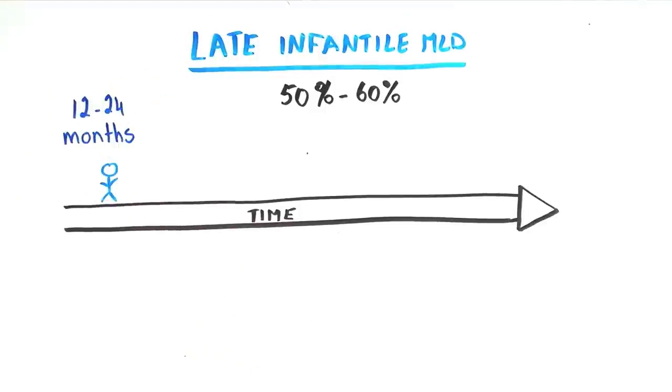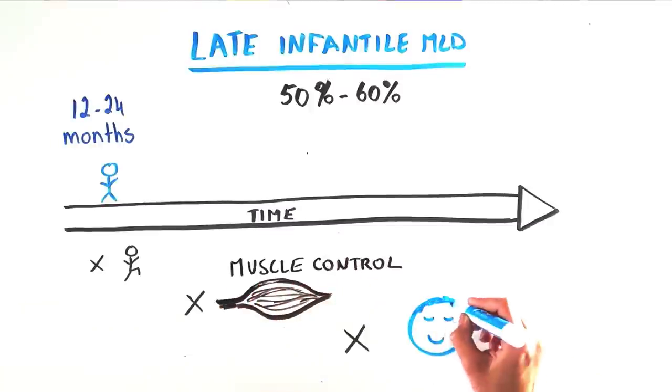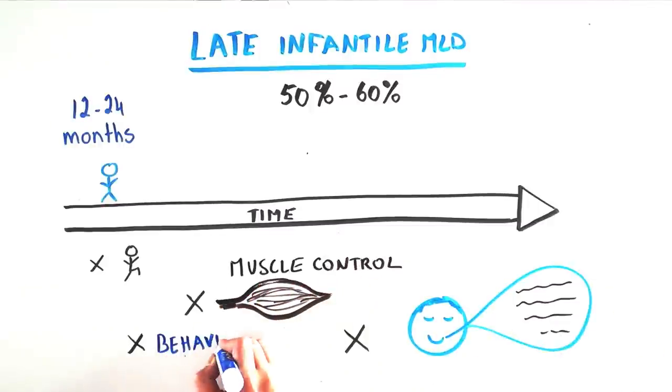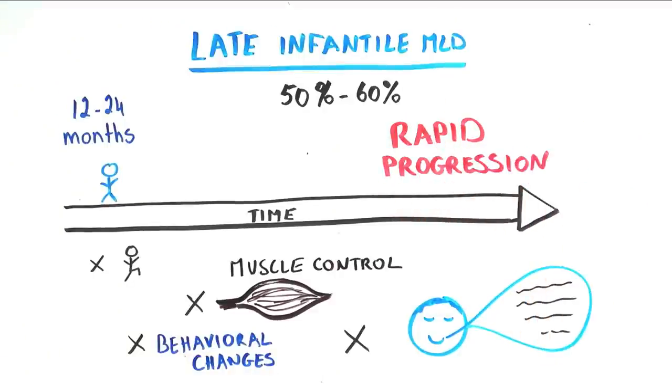It is often diagnosed after a child stops or fails to walk, loses muscle control, has difficulty swallowing and speaking, or shows behavioral changes. Progression can be very rapid, often measured in weeks and months.